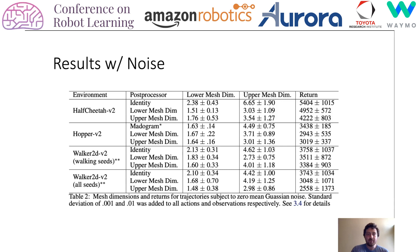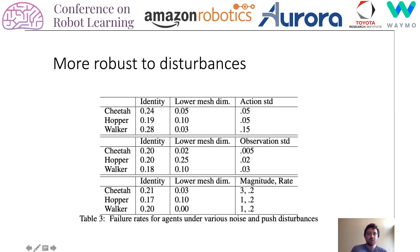We also wanted to verify that these results hold when we add noise to the system at runtime — not during training, but just taking the normally trained environments and adding noise to verify that the mesh dimensions are in fact lower. Indeed they are. We also found by happy accident that these systems are more robust to different kinds of disturbances than the unmodified agents. We pushed these systems with different external forces and applied noise both to their actions and to the observations, and found that failure rates are significantly smaller when trained with the mesh dimension reward.